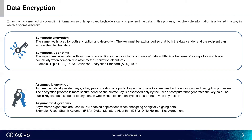Asymmetric algorithms are used in PKI-enabled applications for public key encryption and digital signatures. Some commonly used algorithms are DSA, RSA, and the Diffie-Hellman key agreement. Here, the RSA algorithm can be used for both encrypting and signing data, whereas DSA can only be utilized for the signing process.